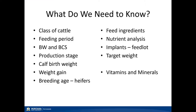There are a few things we need to know before we start to balance rations, whether using a Pearson square or a computer program. We need to know the class of cattle to determine the nutrient requirements and if the ration we develop will meet those requirements. Second, how long are we going to be feeding these animals? Third, what's the current body weight and body condition score? Are they in good body condition? Do we need to add weight to our mature cows or bulls, which increases their nutrient requirements? Therefore we may have to alter the ration to meet those requirements.